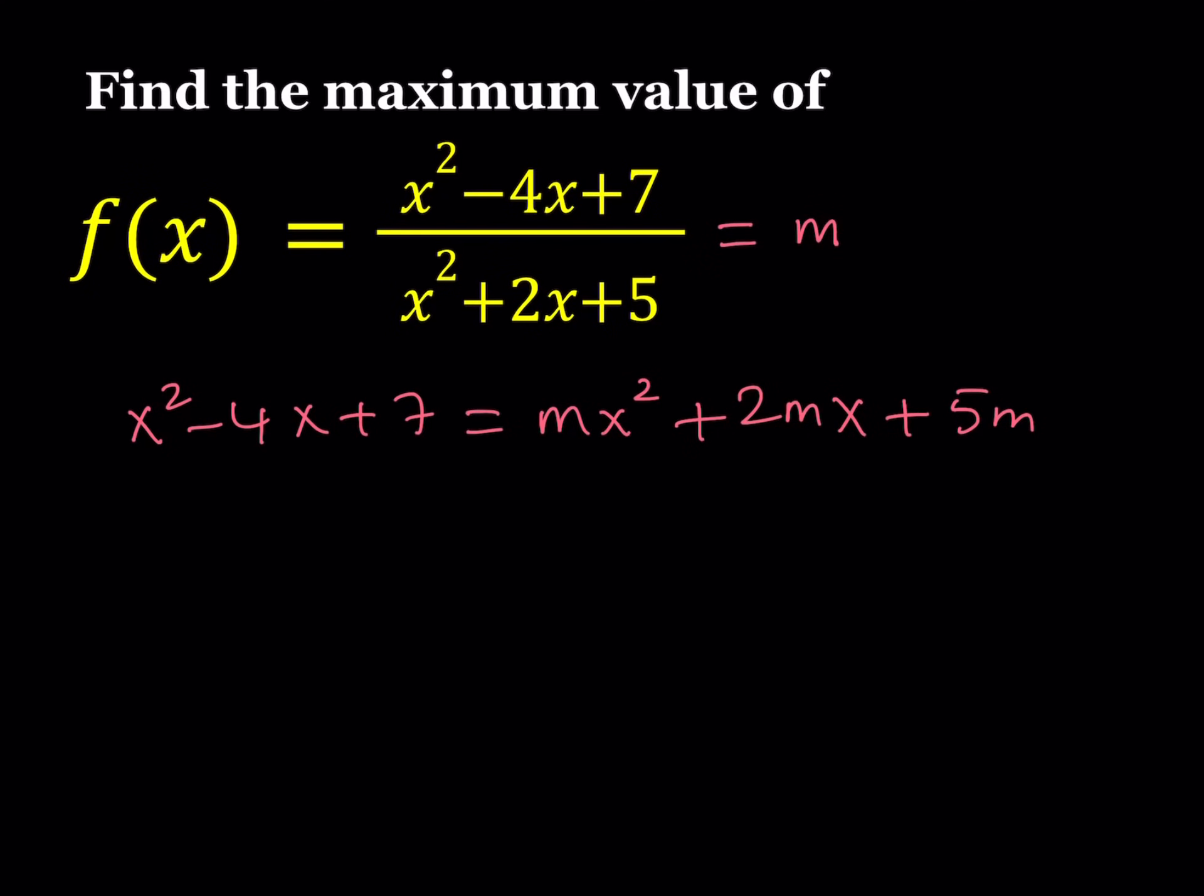I'd like to put everything on the same side. So mx squared minus x squared, so it's going to be (m minus 1)x squared. And then 2m plus 4x. And then finally, 5m minus 7 is equal to 0.